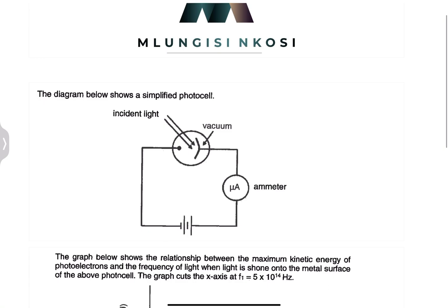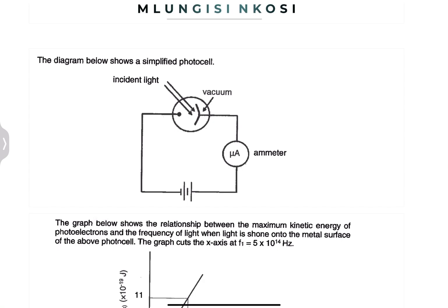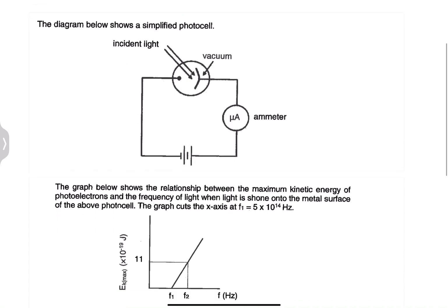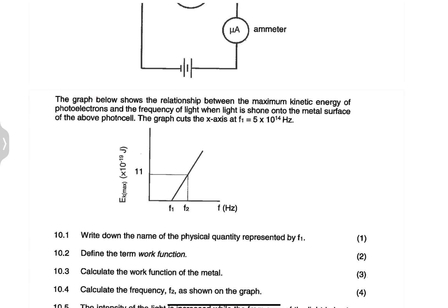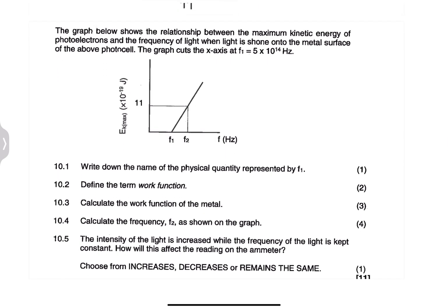Now let's look at the question quickly. So they said to us, we have got a diagram. The diagram below shows a simplified photocell. So we know there's incident light there, and there's a cathode, and of course that induces a current in this case. They say the graph below shows the relationship between the maximum kinetic energy of the photoelectrons and the frequency of light when light is shown onto the metal surface of the above photocell. They say the graph cuts the x-axis at f1, which is 5 times 10 to the exponent 14.